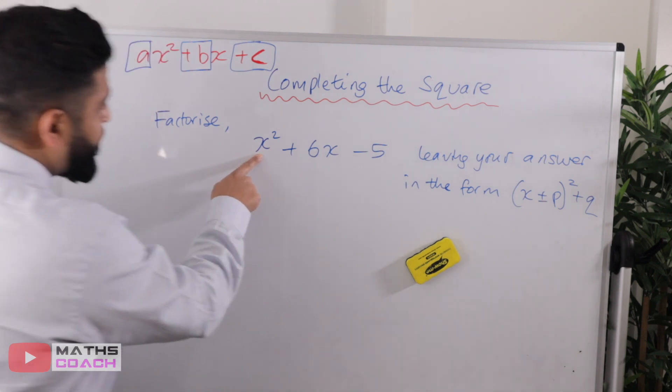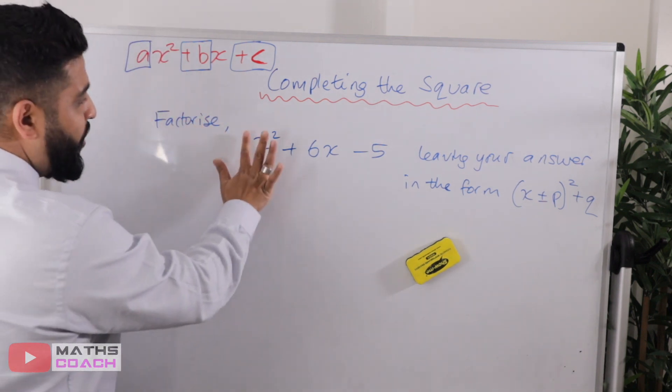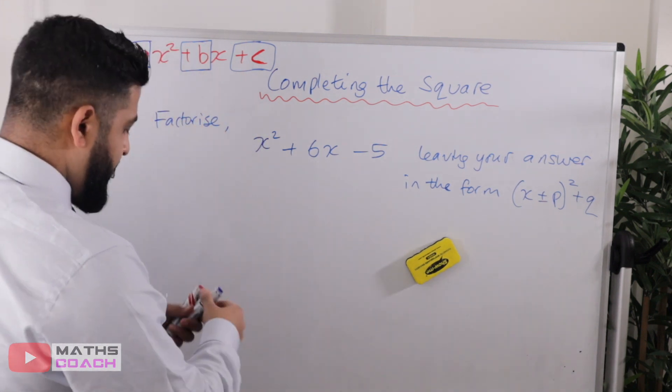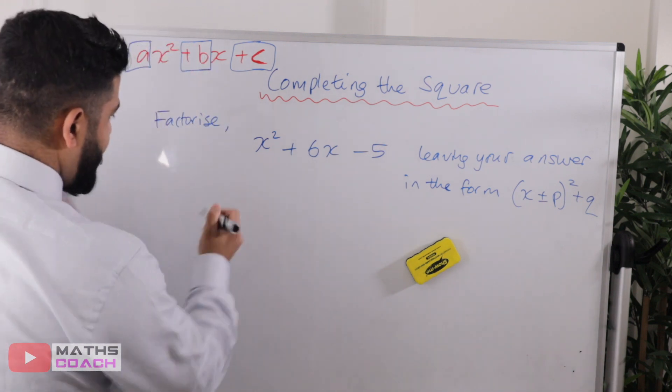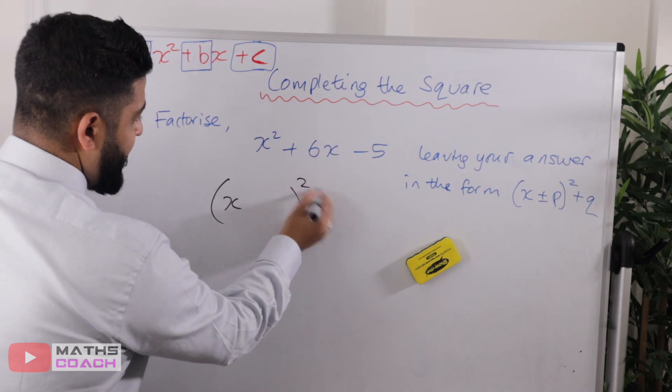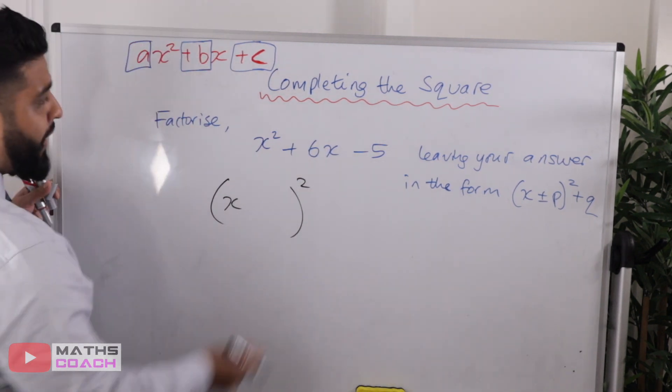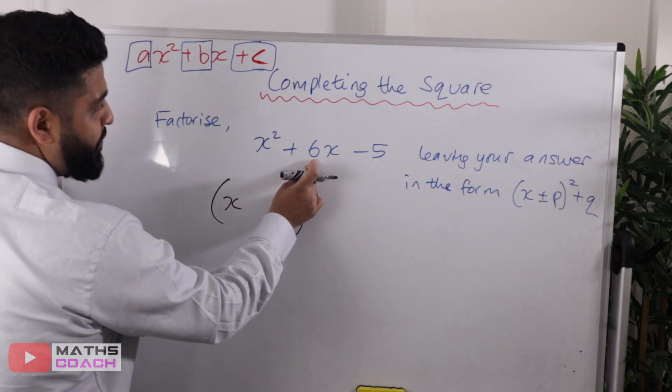So step number one, the coefficient of x² is already one, so I don't need to worry about that. So what I do, how I start is with an empty bracket with an x and a squared here. Now, step number two, the coefficient of b.